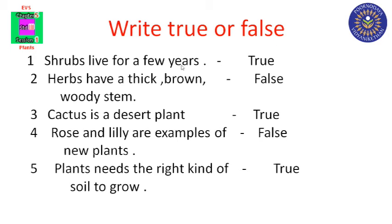Write true or false. First, shrubs live for a few years — True. Second, herbs have a thick brown woody stem — True. Third, cactus is a desert plant — True. Fourth, rose and lily are examples of new plants — False. Fifth, plants need the right kind of soil to grow — True.